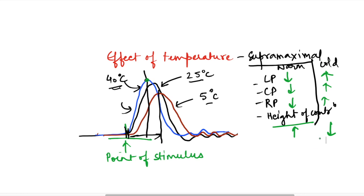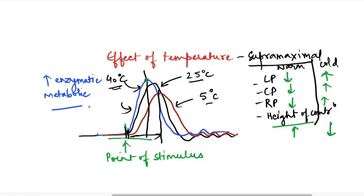Now comes the second part — why are we getting these results? In warm temperature, there is an increase in enzymatic reactions. Temperature affects enzymatic reactions, so there is an increase in enzymatic and metabolic activities when temperature rises. Because of this, there is a decrease in resistance in the muscle, so movement is faster. The ion channels also open more readily, increasing ionic flow, which is why there is an increase in speed of contraction with a decrease in latent period.